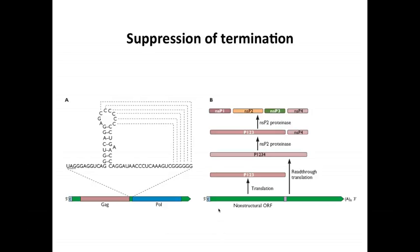On the right is an example of a togavirus, where the genome is a plus-stranded RNA. When it enters cells, ribosomes bind the cap and translate the first open reading frame, reaching a termination codon and making protein p123. About 5–10% of the time, suppression occurs via a tRNA, allowing synthesis of a longer protein p1234. These four proteins together constitute the viral RNA polymerase. Again, since these are enzymes, the 5–10% suppression level is sufficient to produce active levels of the polymerase.